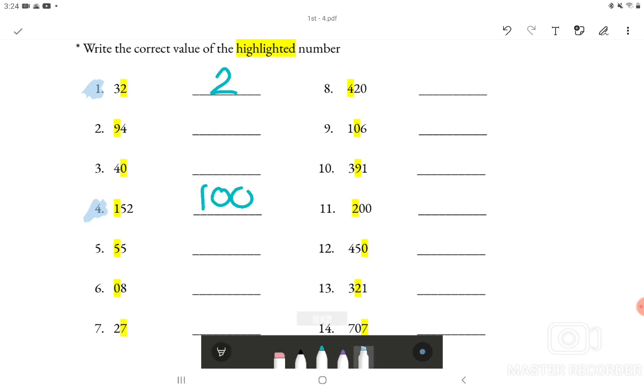Lastly, looking at number 13 it says 321 and the highlighted part is on the 2 which is in the tens place. So we would have to write 20 as the answer for number 13.